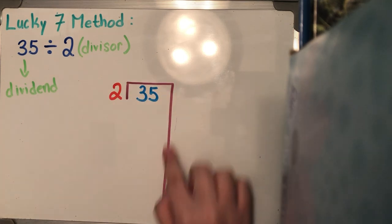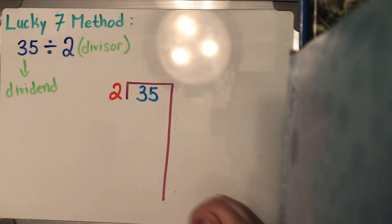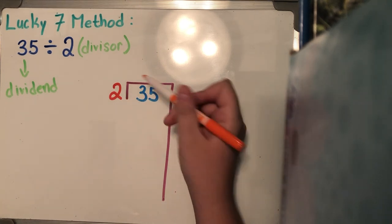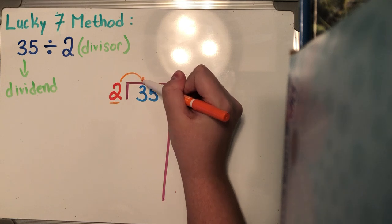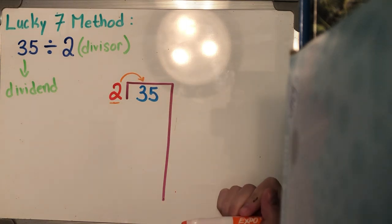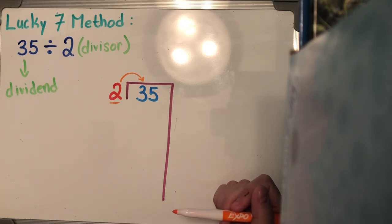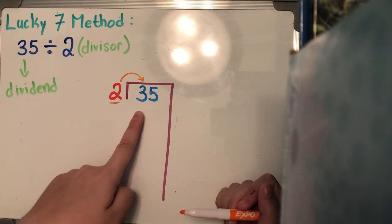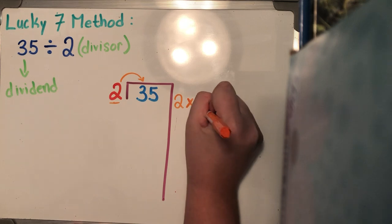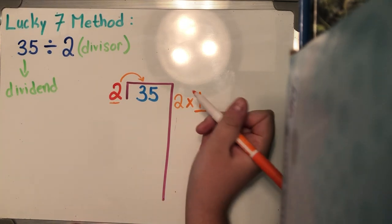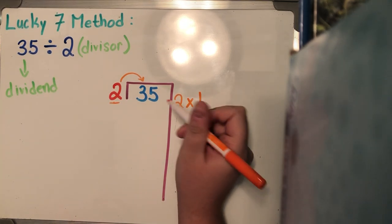Now this is our lucky seven bracket. Remember we extend it all the way down because we're going to be doing a lot of math, so we want to make sure we have enough room. Our first step is to ask ourselves how many times can two go into three? You're going to need to know all your multiplication facts. Two times one is two, two times two is four — four is bigger than three, so two can go into three one time. I'm going to put off to the side two times one, which is two.